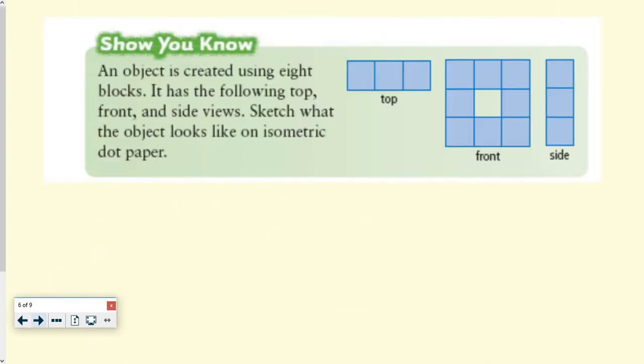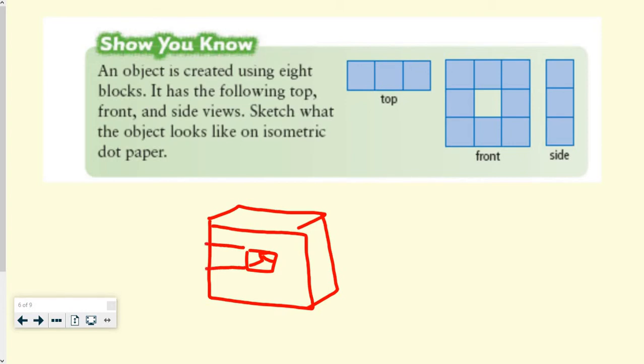So close, I had to open my mouth. So to show you, an object is created using eight blocks. It has the following top, front, and side view. Sketch what the object looks like on isometric dot paper. So we're going to have a cube. And that's going to be one square deep. And we know that it's going to be empty in the middle. Art. So that's kind of what it's going to look like. If you wanted to separate it, we have different blocks. Right there.